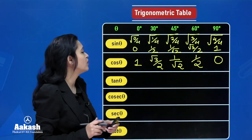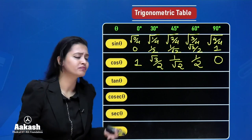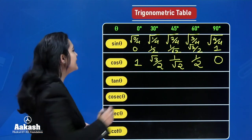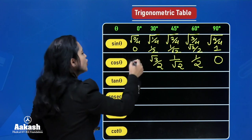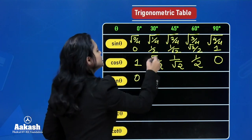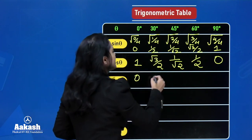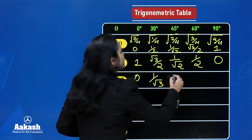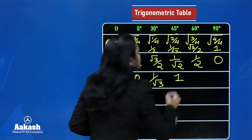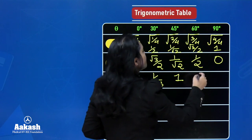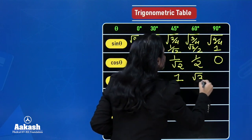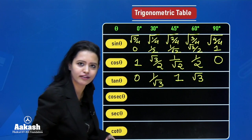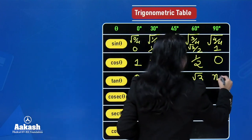For tan theta, since tan = sin/cos, just divide the corresponding sin and cos values. 0/1 = 0; (1/2)/(√3/2) = 1/√3; (1/√2)/(1/√2) = 1; (√3/2)/(1/2) = √3; and 1/0 is not defined. So tan values are: 0, 1/√3, 1, √3, and not defined.